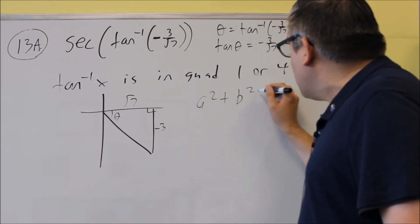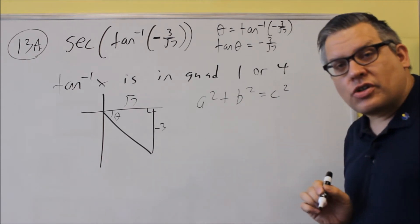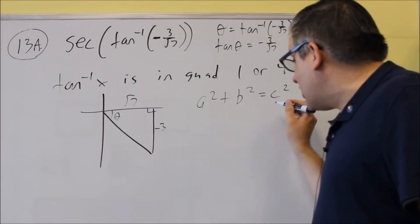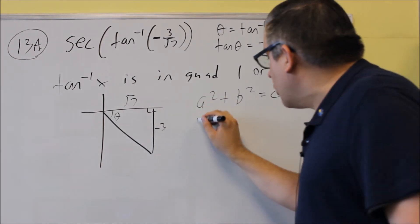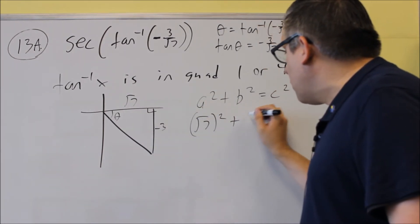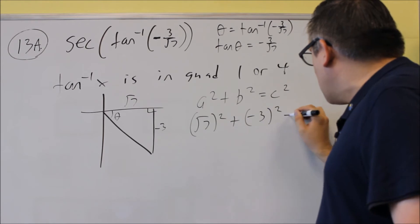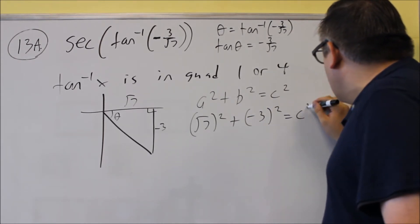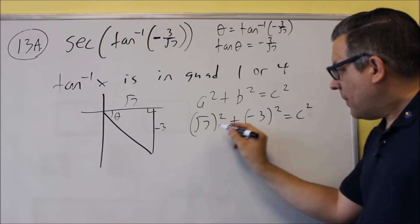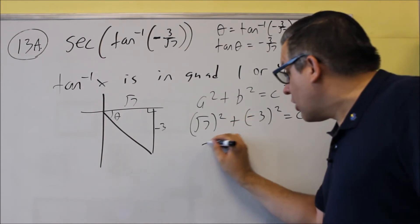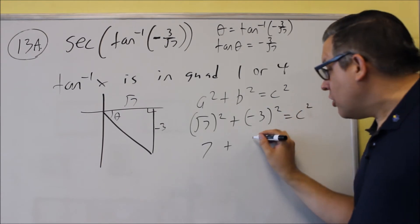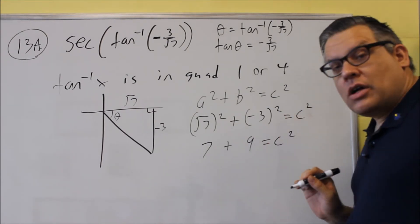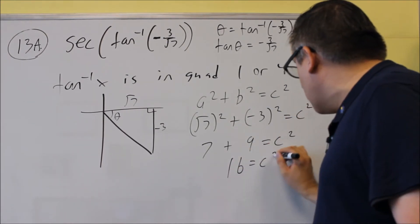We can find the hypotenuse by doing a squared plus b squared equals c squared. So we're going to do the c is the one that's missing. That's the side opposite the right angle. So we're going to put the square root of 7 squared plus negative 3 squared. If we square this, we're going to get rid of the radical and you get 7. Negative 3 squared, you get 9.